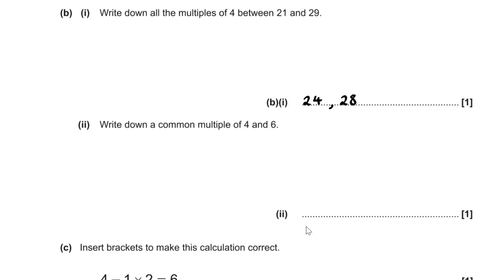For the second part of part B, we have to write down a common multiple of 4 and 6. We can choose any number that is a multiple of both 4 and 6. For example, we could have 12, because 4 and 6 both go into 12.